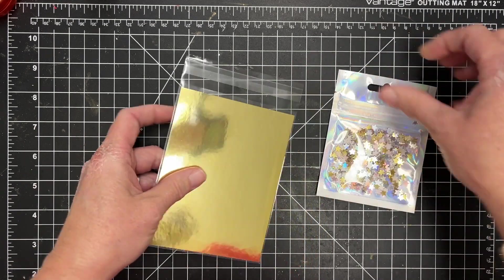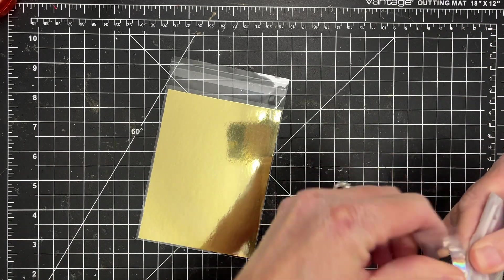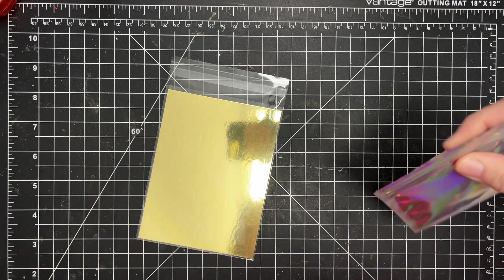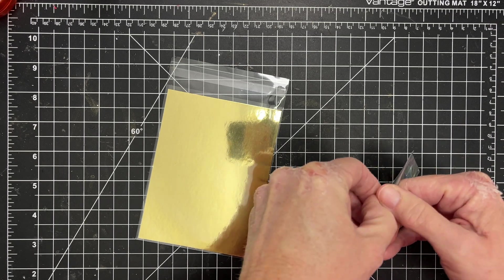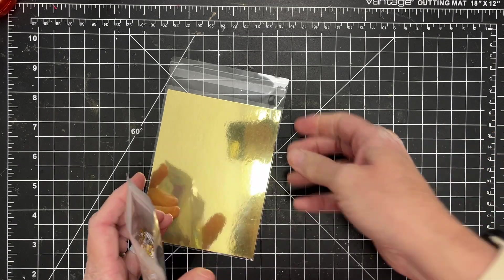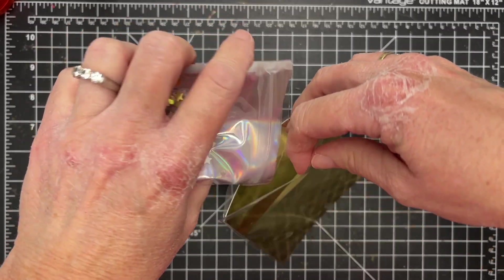And you can make a really quick and easy shaker card with them just by cutting some paper, adding it into your envelope, and then you can decorate it as you wish. So I'm going to open up these stars and fill my little pouch and seal it up. This is going to be the quickest shaker card you've probably ever seen.